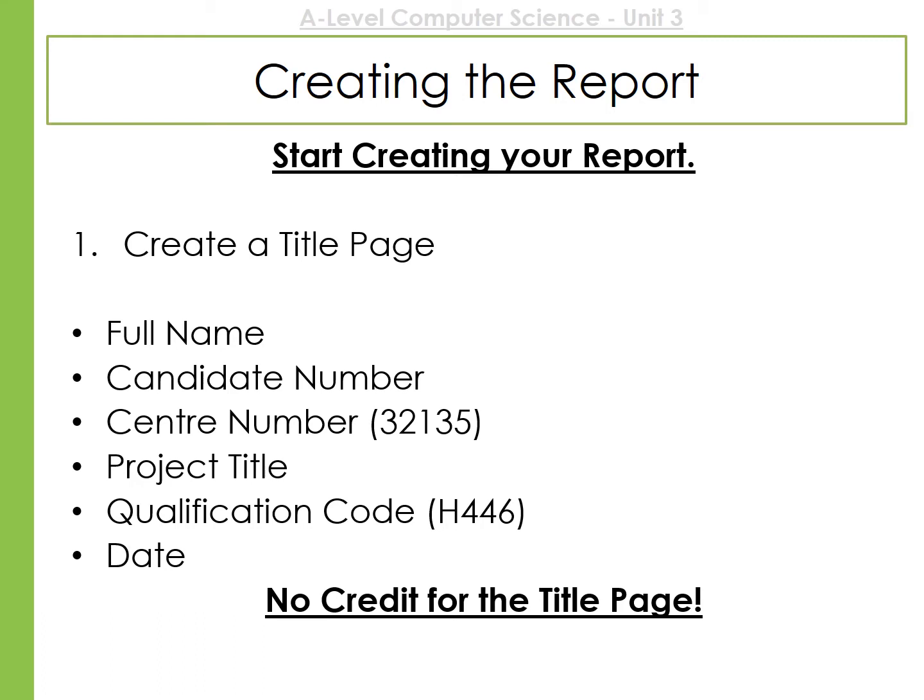The best place to do this is in Microsoft Word or Google Docs. The first page should be a title page, but there's no credit for this. You need to include your full name, your candidate number, your centre name, centre number, project title, and the course code, which is H446.